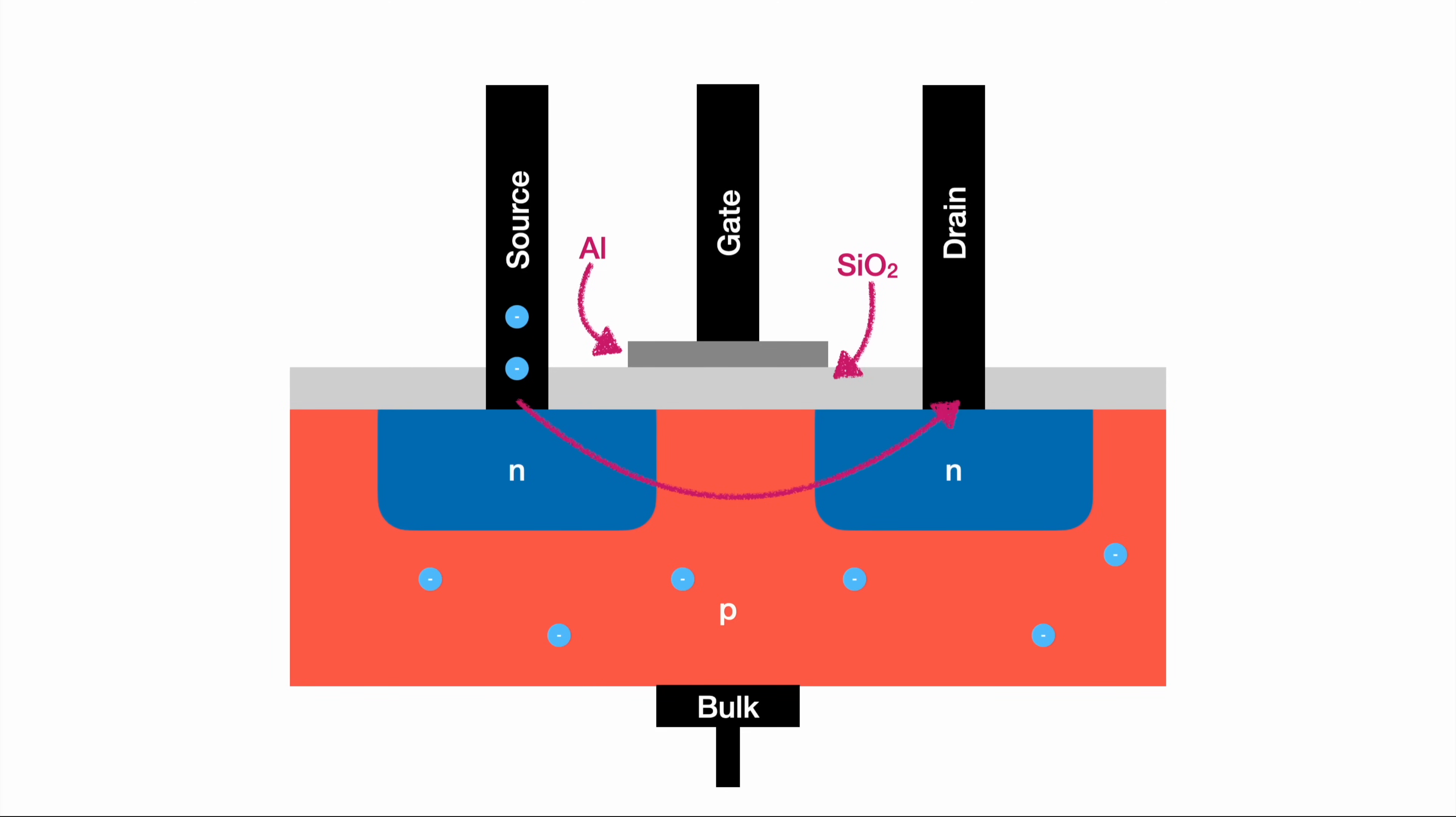To do so, we arrange a positive charge on the gate. This highly positive charge is enabled by a voltage applied to the gate. Even though only a few electrons are available in the slightly positive doped area, we can attract them with this highly positive charge.